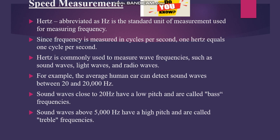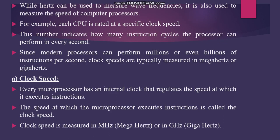Hertz is used to measure wave frequency for sound waves, light waves, and radio waves. The human ear can detect sound waves between 20 Hz and 20,000 Hz. Low pitch corresponds to 20 Hz, while sound waves above 5,000 Hz are high-pitched — called treble frequencies. Clock speed also measures the speed of the computer processor, rated at a specific speed. Modern processors perform millions to billions of instructions per second, measured generally in megahertz or gigahertz.